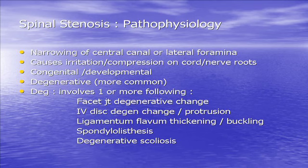Now, spinal stenosis. The pathophysiology: it's the narrowing of the central canal and/or the lateral foramina. It causes irritation and compression on the cord and exiting nerve roots, and it could be unilateral or bilateral. It can be congenital, developmental, but more commonly it's degenerative. It can involve facet joint degenerative changes with ligamentum flavum buckling — all narrowing up the foraminal area and the central canal.